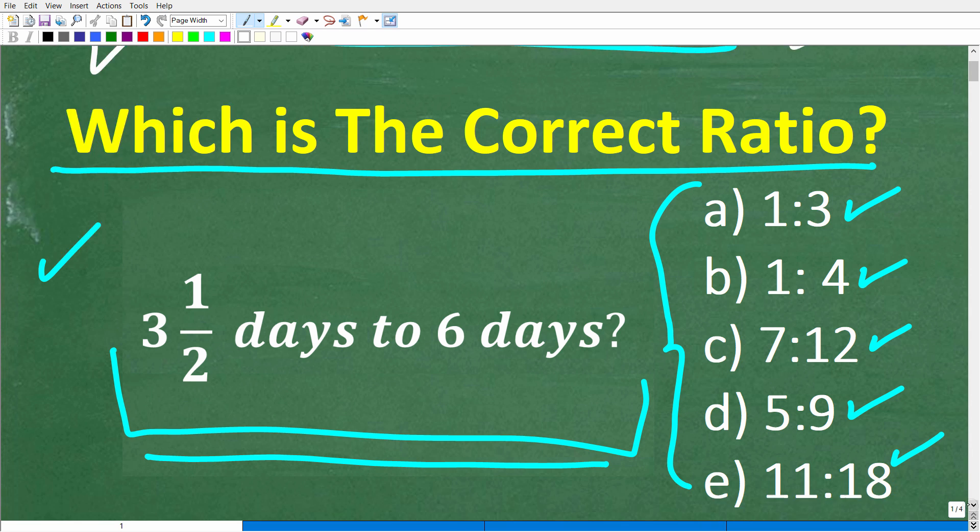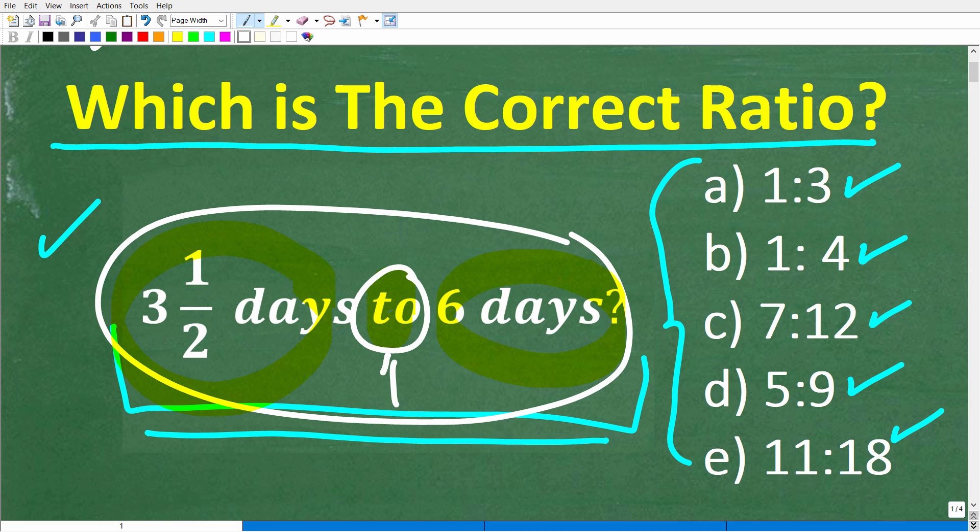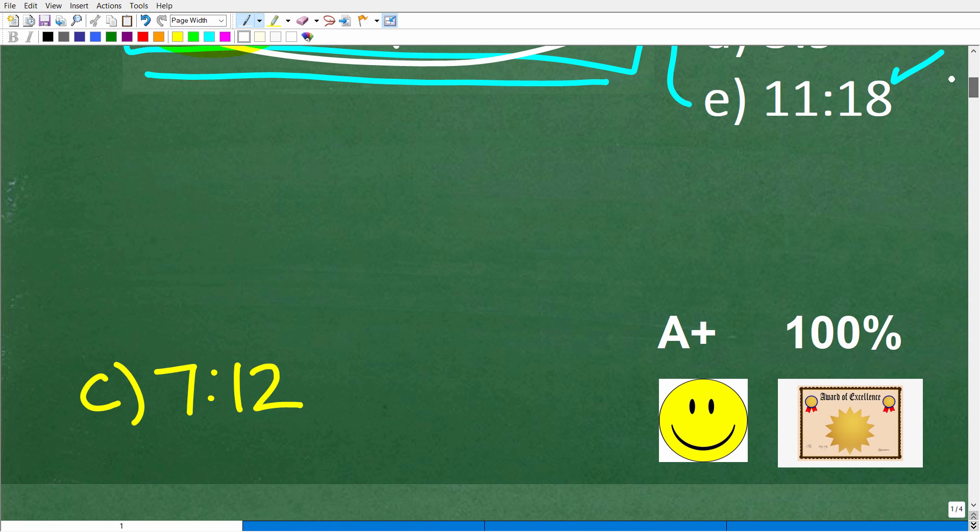All right, let's take one more look at the question before I show you the answer. So we have 3 1/2 days to 6 days. Now, in mathematics, this word 'to', when we're talking about ratios, is equivalent to the colon notation. So when you see this colon right here, that means the same thing as the word 'to'. But again, one of these ratios is equivalent to this ratio. Which one is it?